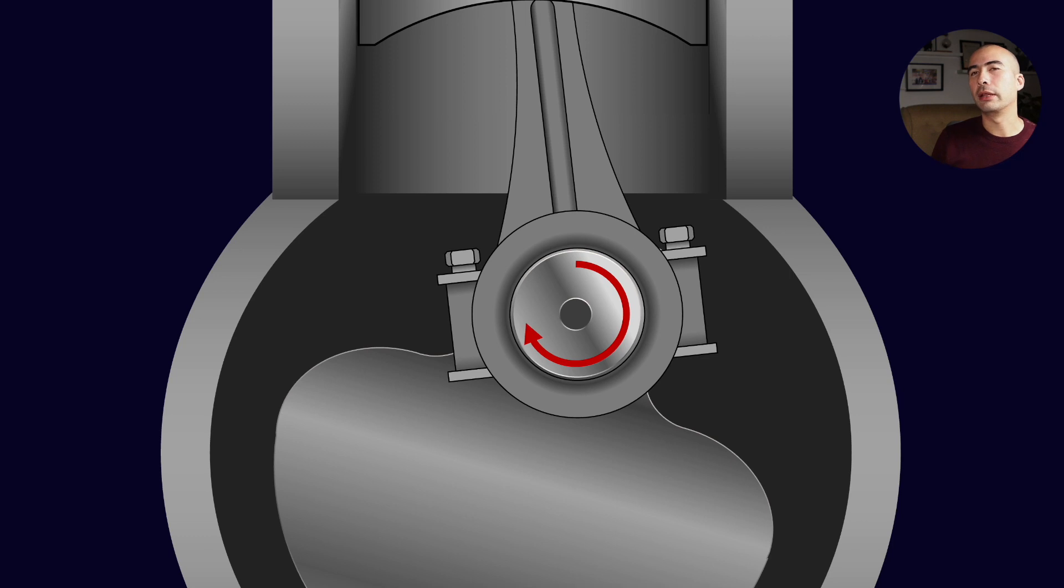Let's say for example that we are on the power stroke—we've just had a controlled explosion that has happened above the piston, and so the force is being transmitted from the piston through the connecting rod in a downward fashion.